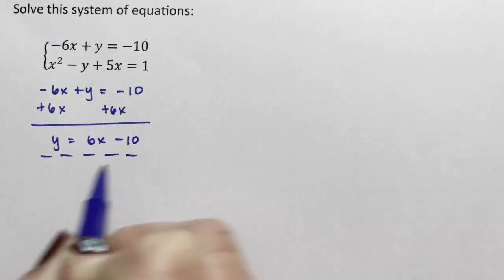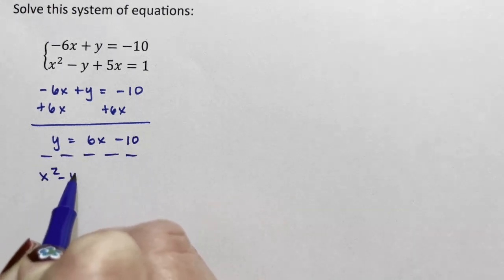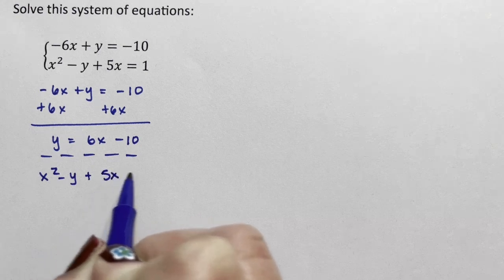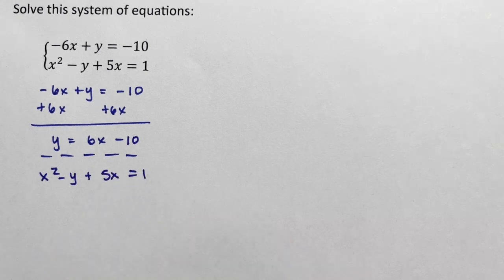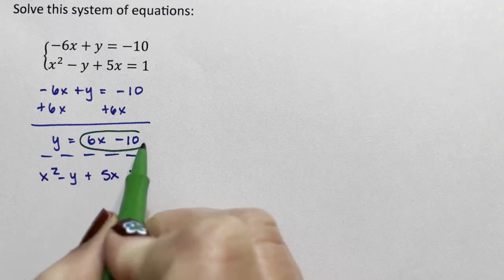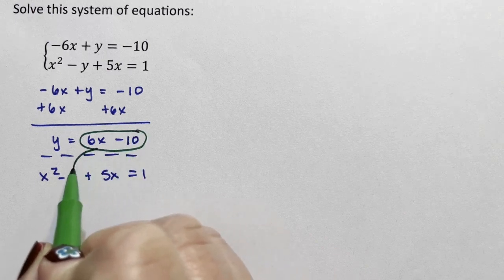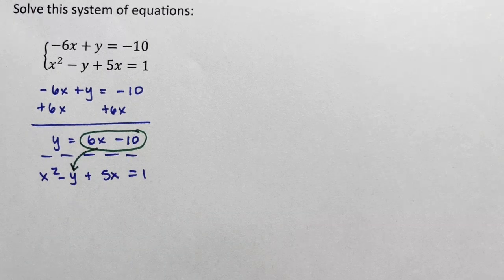Then I'm going to take the second equation, the x squared minus y plus 5x equaling 1. And I'm going to take the first equation, this 6x minus 10,